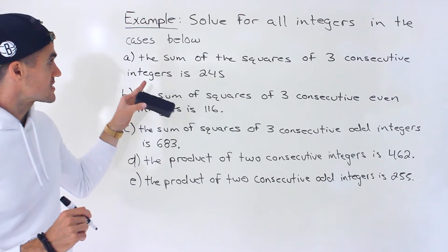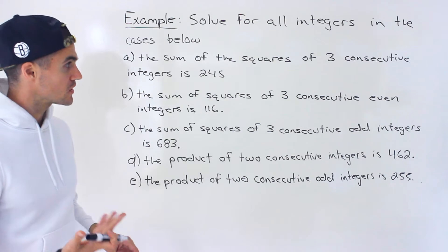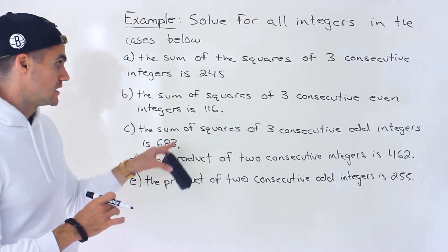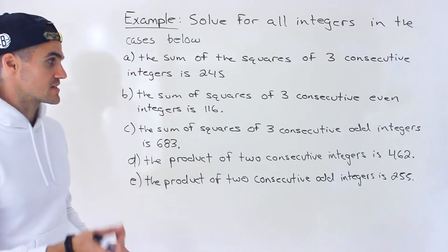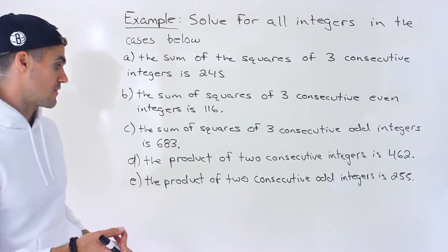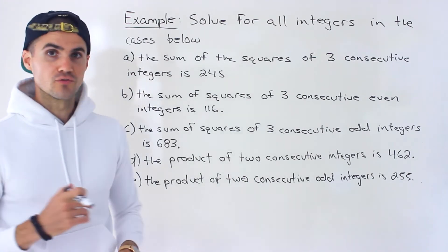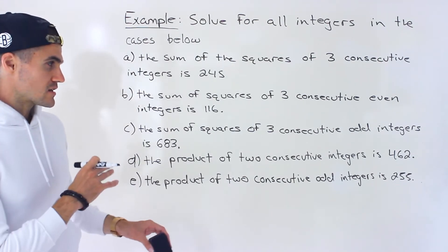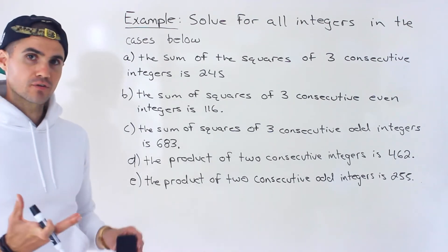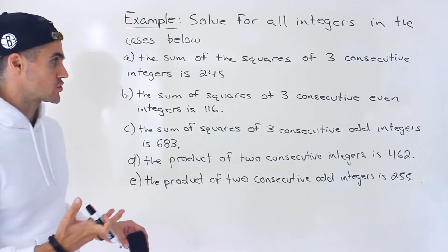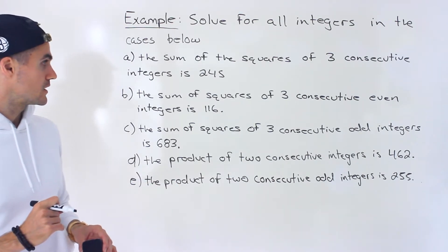The first case: the sum of the squares of three consecutive integers is 245. In part b, the sum of squares of three consecutive even integers is 116. The sum of squares of three consecutive odd integers is 683. The product of two consecutive integers is 462. And then part e, the product of two consecutive odd integers is 255. All of these are similar but have some differences, and I wanted to bring in these different cases so that when a question like this arises, you're comfortable adjusting to whatever scenario is presented.